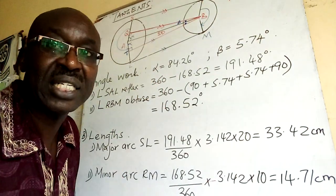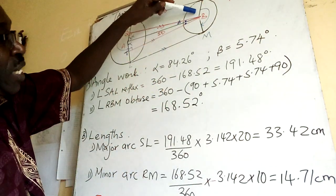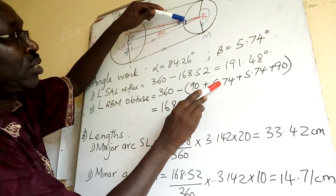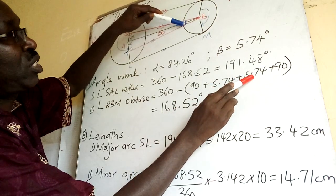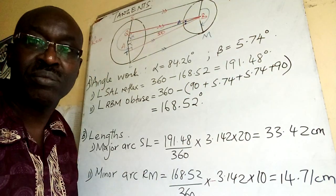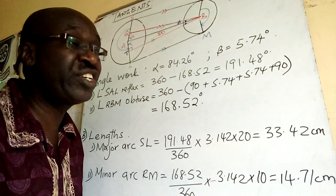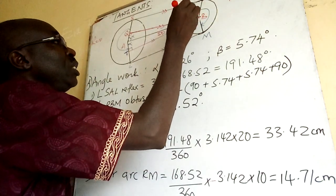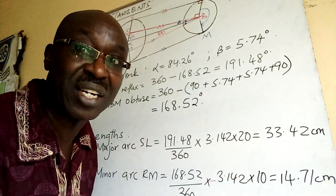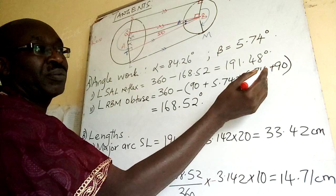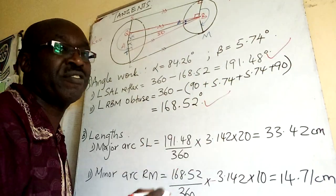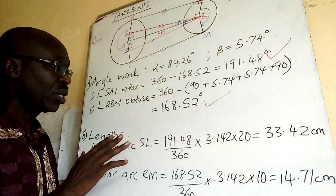Now deal with angle RBM obtuse. It is 360 minus 90 minus the dot angle minus another dot angle minus 90. The reason for the 90s is that a diameter and a tangent meet at 90°. Doing that calculation gives us angle RBM.